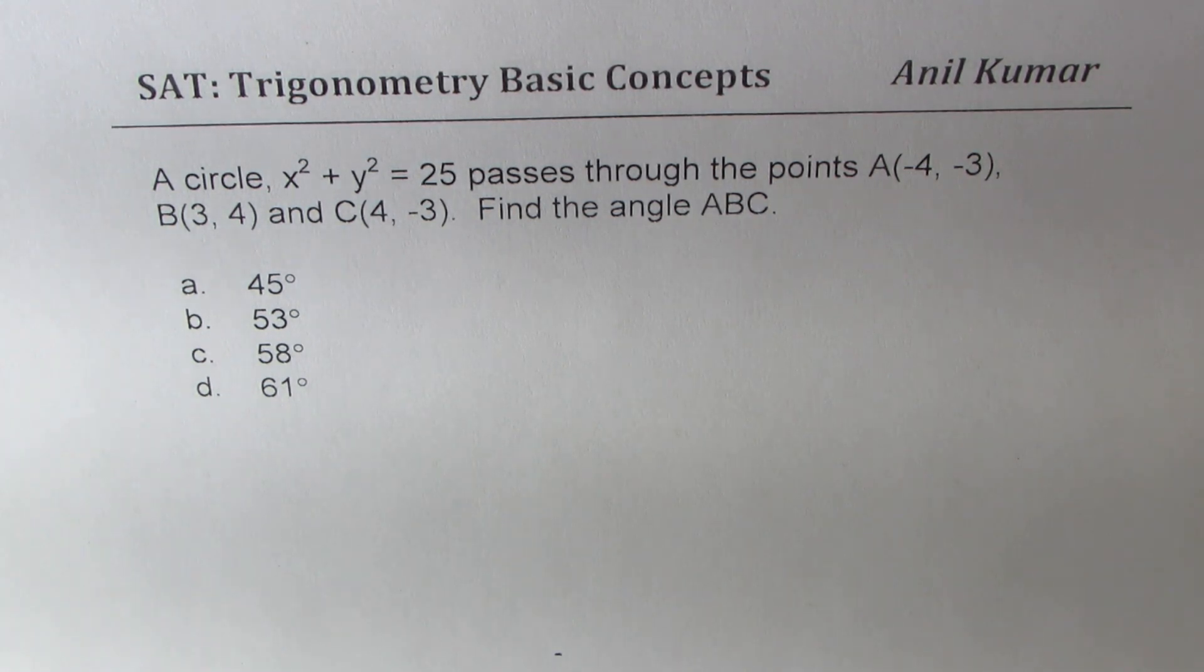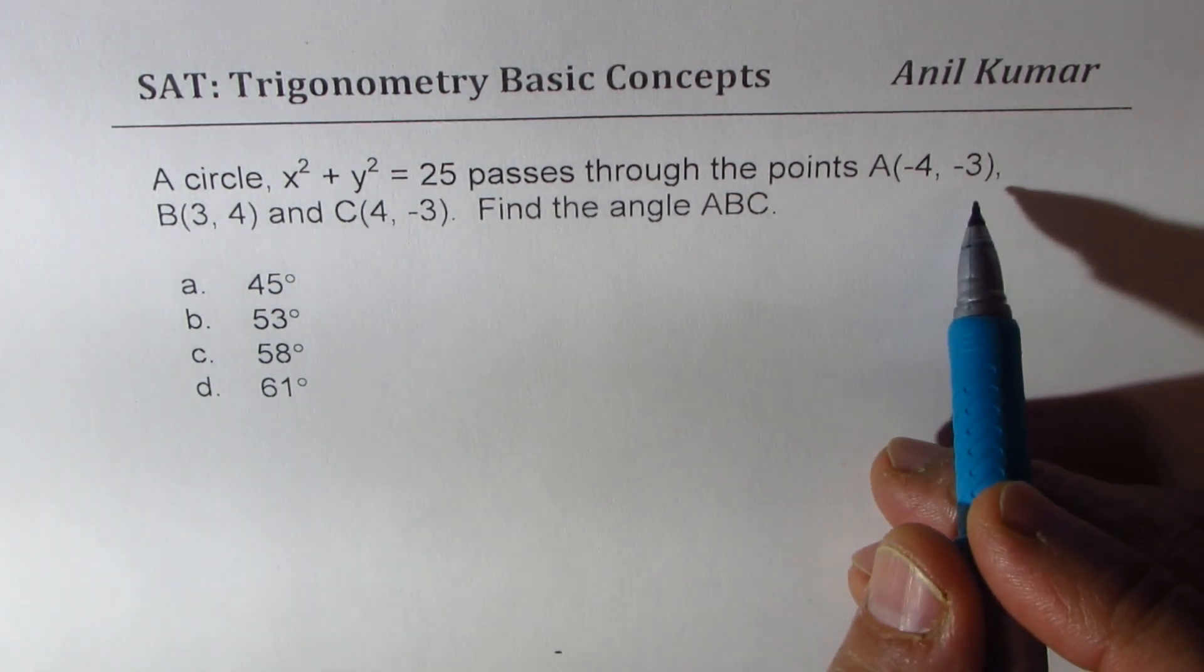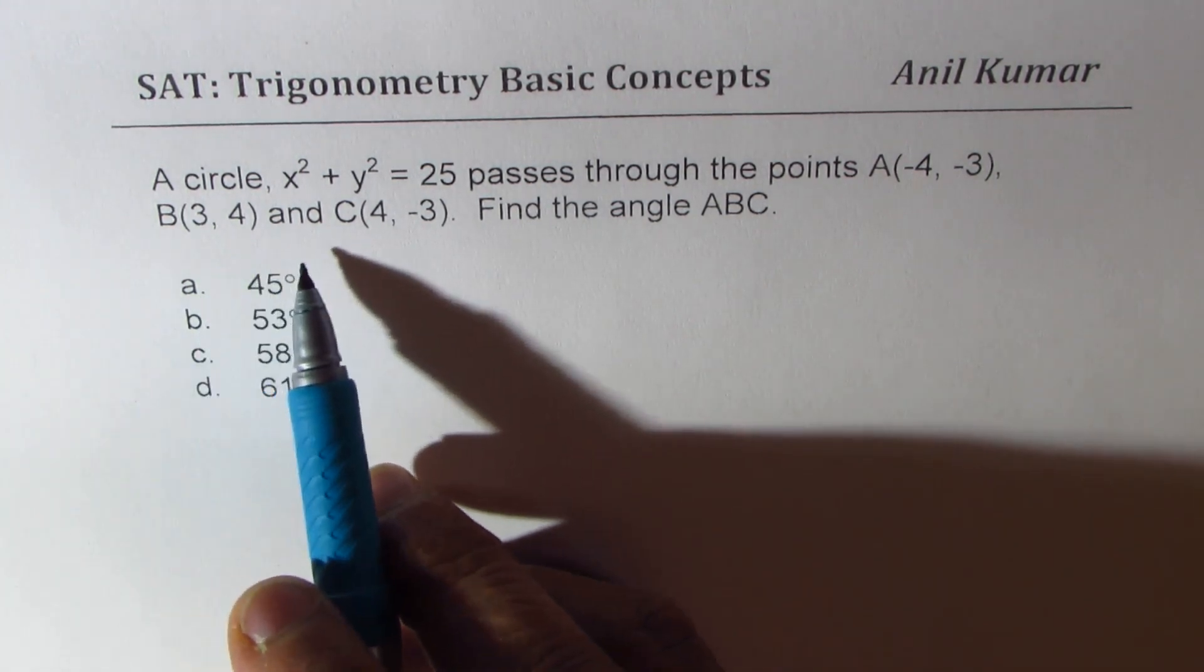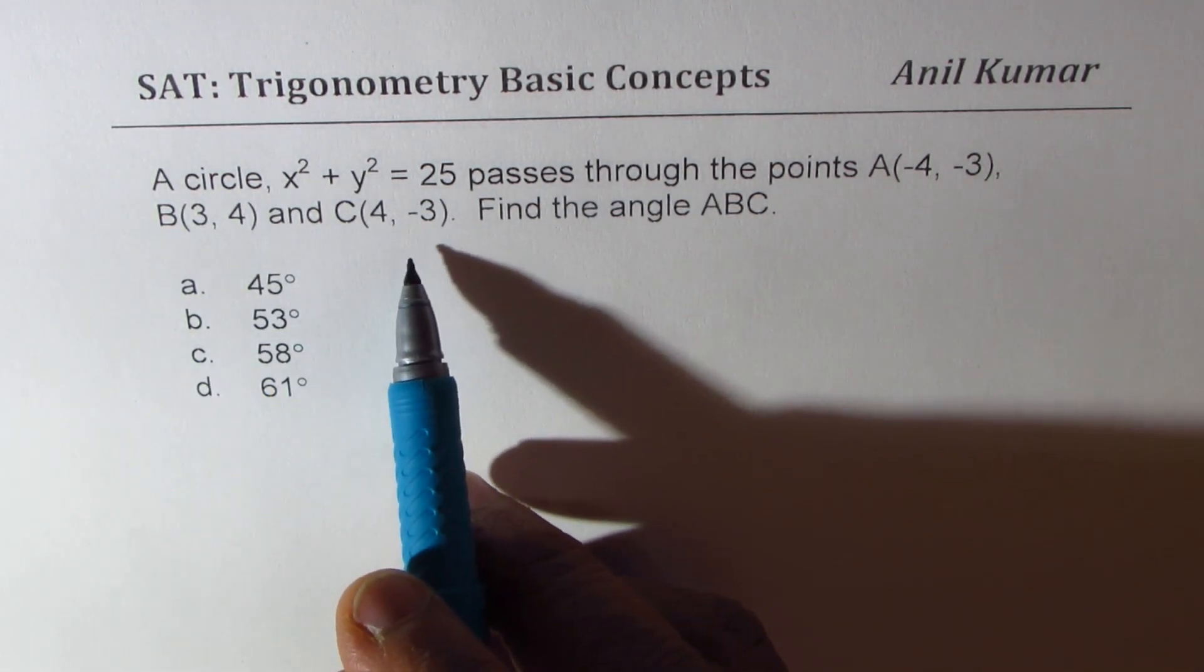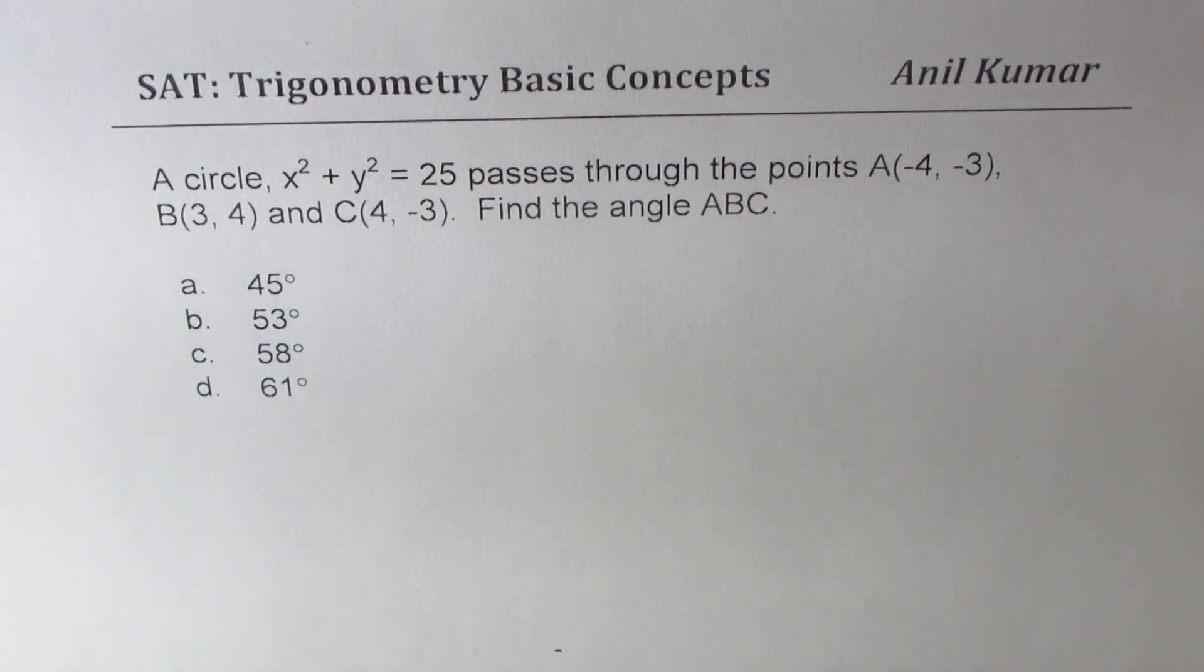This question is involving circles and trigonometry. Let us see how to solve such a question. A circle x² + y² = 25 passes through the points A(-4, -3), B(3, 4), and C(4, -3). Find the angle ABC. Four choices are given to you.